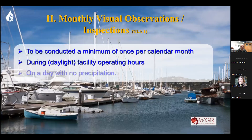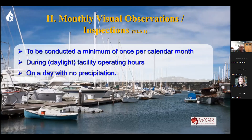Monthly visual observation inspections — the permit expects you to do a monthly inspection. I refer to it as a non-stormwater and BMP status inspection. It needs to be conducted a minimum of once per calendar month. We recommend waiting toward the end of the month to do your inspection, because if something happens later in the month and you did an earlier inspection, you have to go back and re-document it. It has to be done during daylight business hours on a day with no rain, no precipitation.